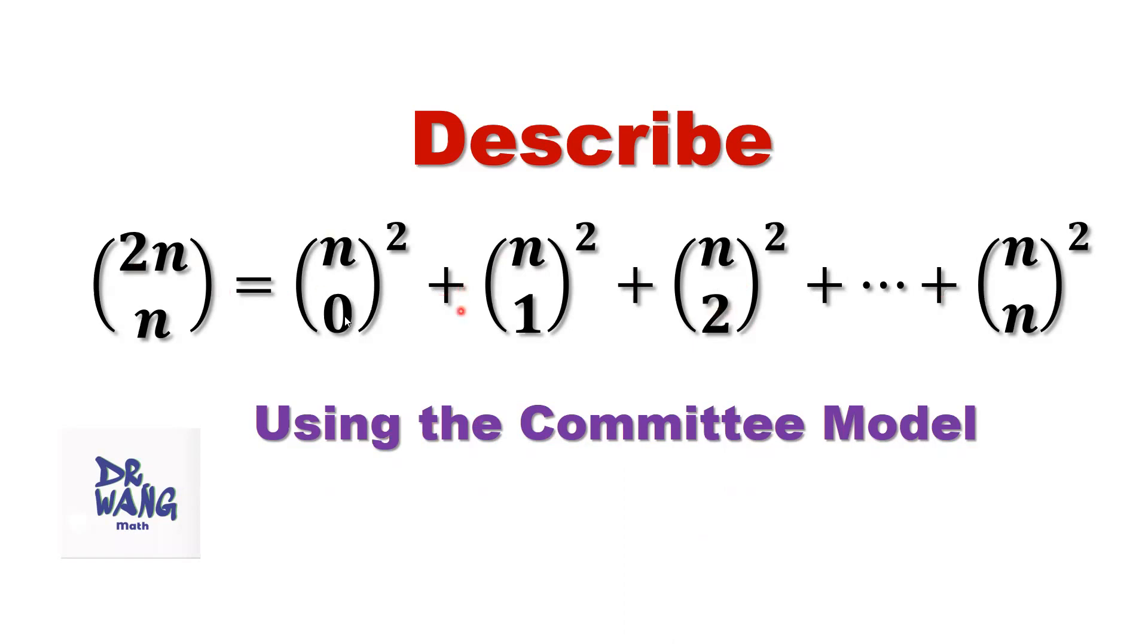This is a combinatorial identity. For most of you, maybe you can see that it is tough. It is difficult, just to give up. What I'm trying to do here is show you that to prove this kind of identity, it's not that kind of difficult. We are trying to use a simple committee model to prove this identity.